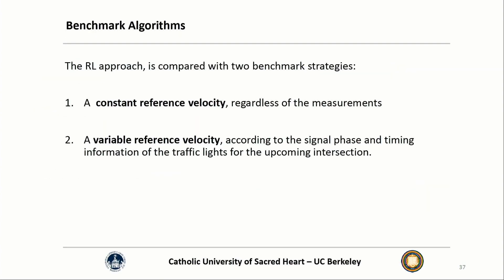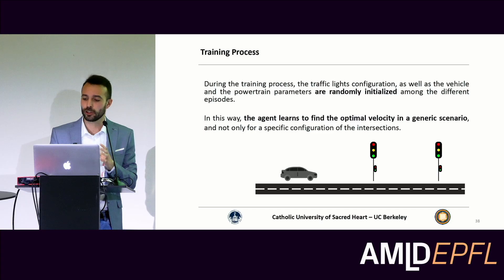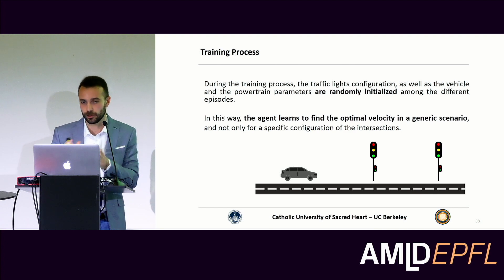We consider two benchmarks: a constant reference velocity coupled with the safety crossing model, which is a common approach in this field, and a smarter version that adapts the reference velocity according to the signal phase and timing of the traffic lights. During training, we varied uncertain parameters within their range of interest, and also varied traffic light distances and configurations, so that the agent learns a generic framework rather than a specific road segment configuration.